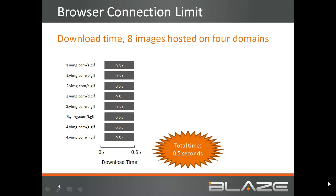If instead you distributed the files across multiple domains, your site visitors would be able to download more resources concurrently, since the browser places limits on parallel downloads on a per-domain basis. More domains means more downloads in parallel, and typically a faster load of the page.